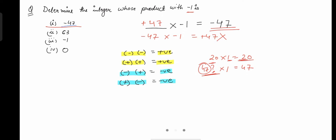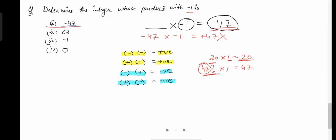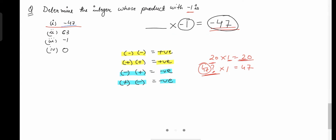Here we need negative 47 as the answer and we have negative 1. So we have to choose a positive number and multiply it with the negative number to get a negative answer. To recap: we need to find a number that when multiplied with negative 1 gives negative 47. We know any number multiplied by 1 gives that number back, so we use 47 — positive 47 — because positive multiplied by negative 1 gives us negative.